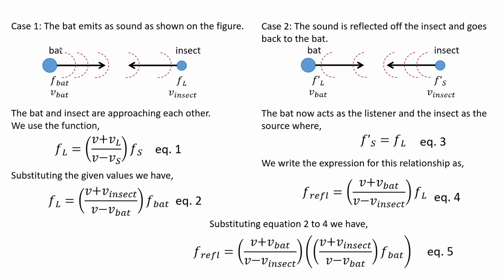We have the bat emitting sound and the insect hears that sound as it approaches. We denote the frequency of the sound that the bat produces as f_bat with a speed of v_bat, and for the insect it has a frequency f_l and the speed v_insect. The bat and insect are approaching each other, so we use an expression that allows us to differentiate this kind of behavior.